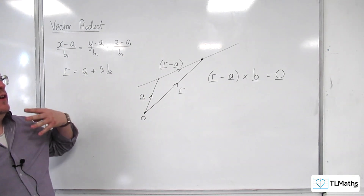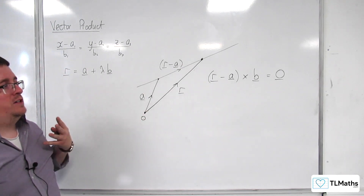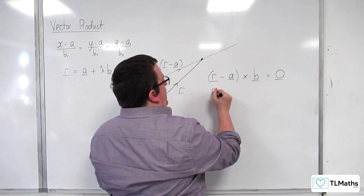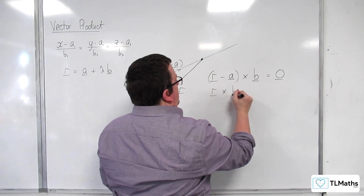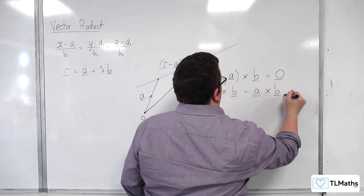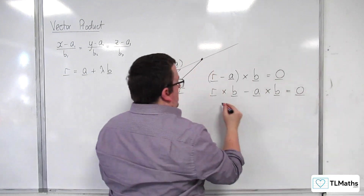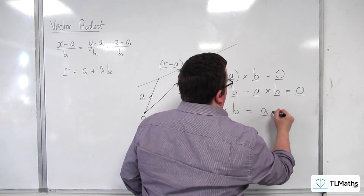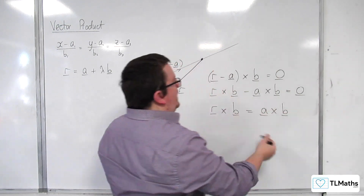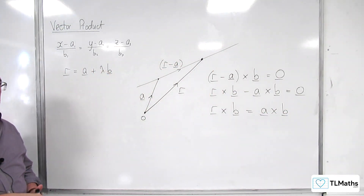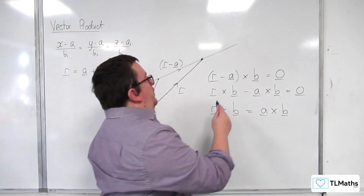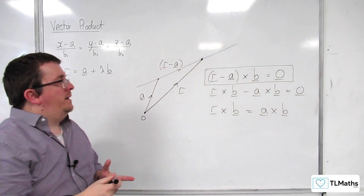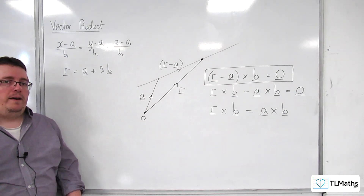What we've seen is that the vector product is distributive, and we can write that as r cross b, take away a cross b, is equal to 0. You can then rearrange it to write it in this form as well, but this is probably the most common form we see — so that is the one that you need to keep an eye out for.